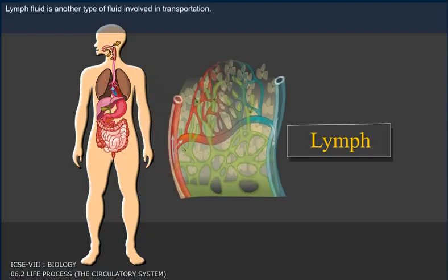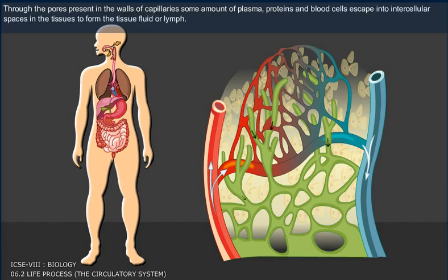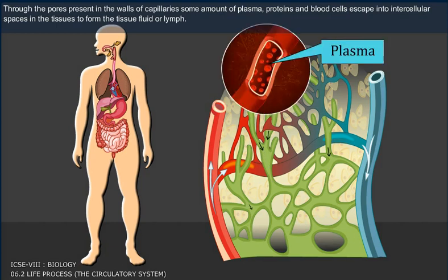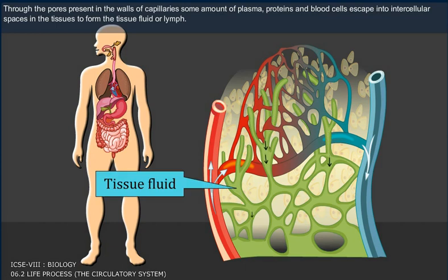Lymph fluid is another type of fluid involved in transportation. Through the pores present in the walls of capillaries, some amount of plasma, proteins and blood cells escape into intercellular spaces in the tissues to form the tissue fluid or lymph.